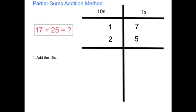The first step is to add the tens. In the tens place I have a 1 and a 2. That stands for 10 plus 20, which equals 30. I place the 3, since it's in the tens place, on the tens side and the 0 on the ones side.